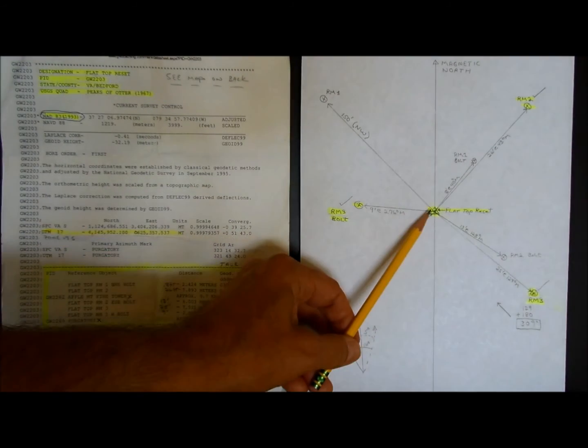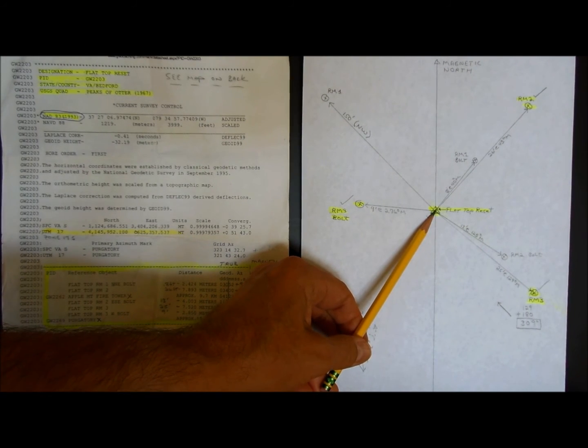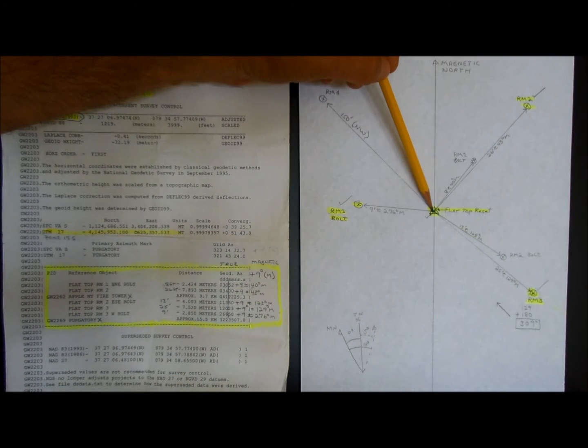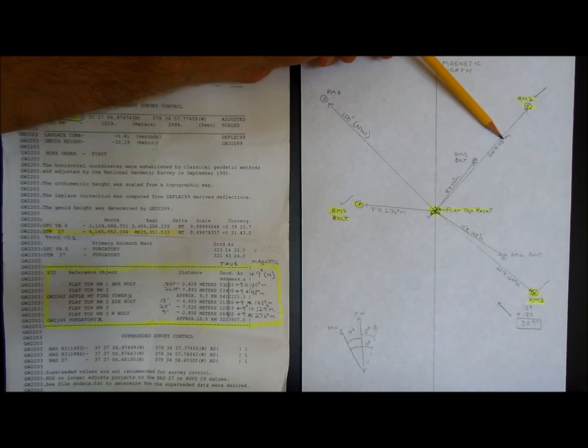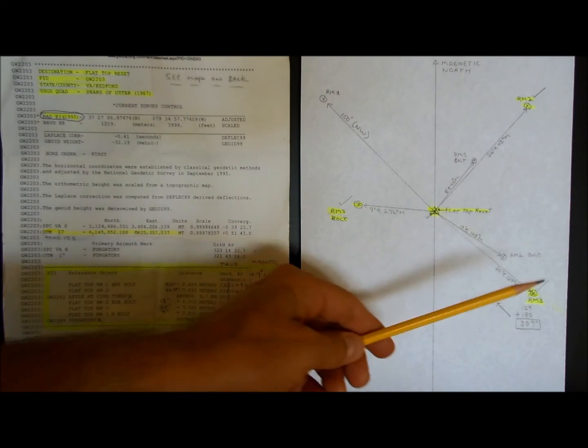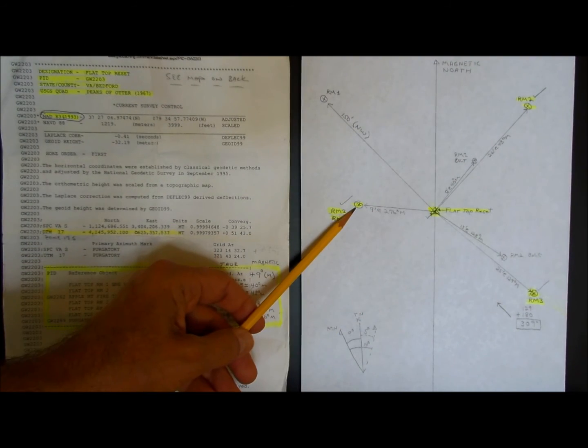Once you find this one, you can start using this diagram directly. You can use these distances and these angles. If you're just wandering around, like for example, I found this one first, then I found this one, then I found this one.